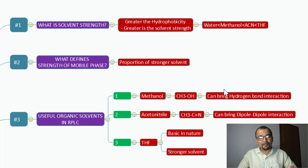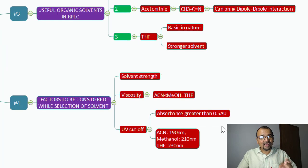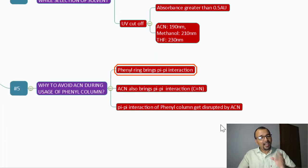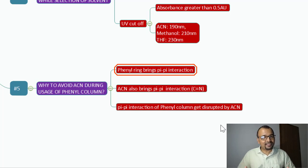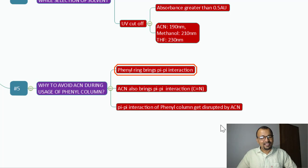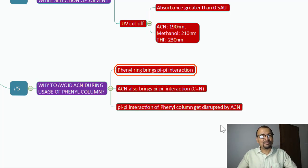I hope you have understood how solvent strength is defined in reverse phase chromatography, the characteristic properties of the three important solvents — methanol, ACN, and THF — the factors that need to be considered during selection of the organic solvent in the mobile phase, and why to avoid ACN when using a phenyl column. Thank you very much for watching this video. I will meet you soon with such informative and useful videos. Till then, take care and bye-bye.